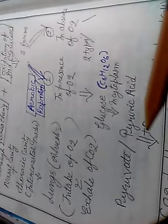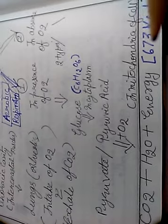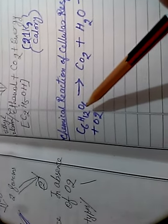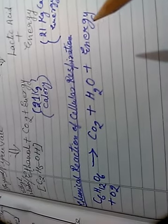In aerobic respiration, glucose is oxidized at the cellular level. Oxygen reacts with glucose to form pyruvic acid or pyruvate; then oxygen further acts on pyruvate to produce carbon dioxide, water, and energy. The chemical equation is: glucose (C₆H₁₂O₆) + oxygen → carbon dioxide + water + 673 kilocalories of energy.